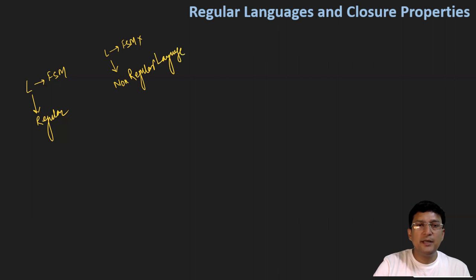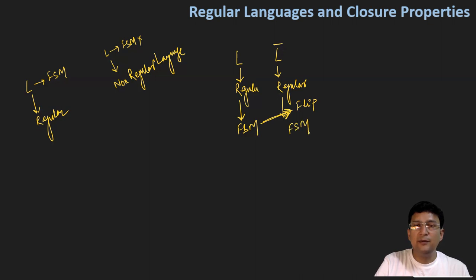After this we saw some properties. If we have a language L which is regular, this means we can create a finite state machine for it. Then the language L complement will also be regular, because its DFA or its finite state machine - we only have to flip the states. So the finite state machine of language L, we flip it, and this will become the finite state machine of language L complement.